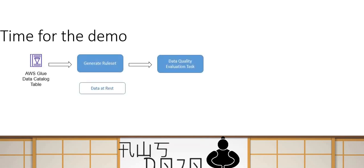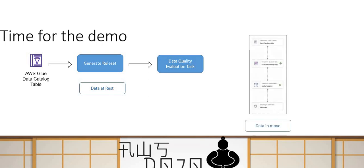What are we going to see in the demo today? We'll see two demos — one is data at rest, where we'll have a data catalog table, generate a rule set, and run an evaluation task from the console. As mentioned, you can also use a Lambda function to call that evaluation task using the API. The second demo will be a small Glue job showing data quality evaluation in move.